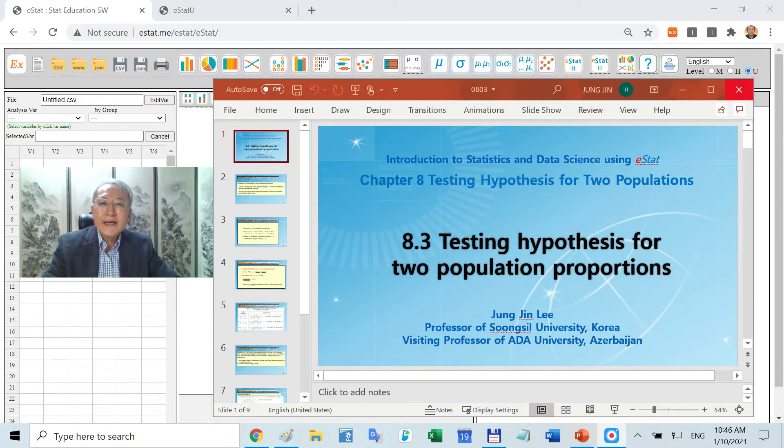In Chapter 8, we have discussed testing hypotheses about the two population means and the two population variances. Today we are going to discuss two population proportions.